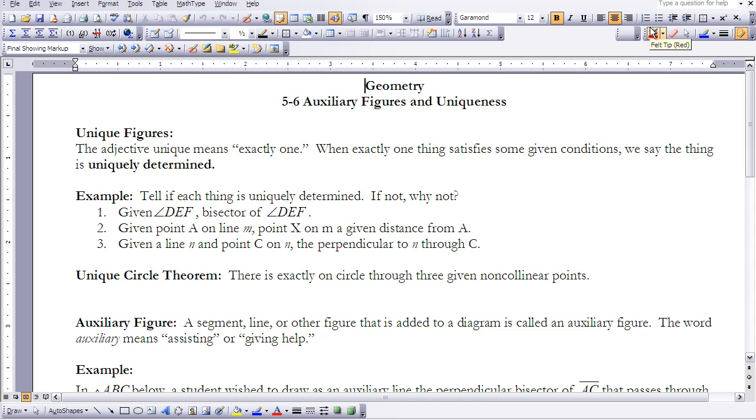I have three examples here that we'll get at this concept. I want you to tell if each thing is uniquely determined. If not, why not? So let's take a look at number one.